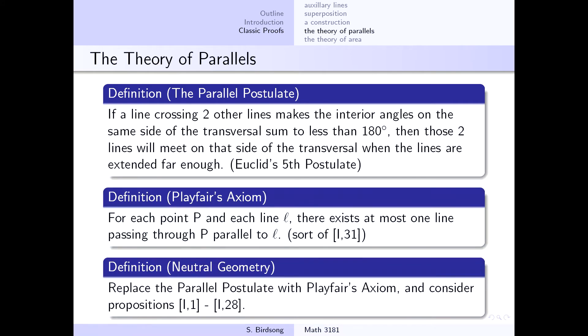put that fifth postulate, we're going to replace it with Playfair's axiom. So you're basically taking everything in Euclid's first book up to Proposition 28 with one replacement, Euclid's fifth postulate replaced with this Playfair's axiom.